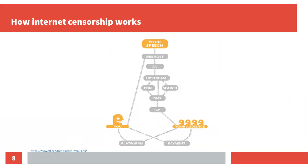That's enough about politics — let's get more technical. I took this picture from EFF. It shows you how internet censorship works. The idea is that you post your speech via a web host, and your audience has to pass all this chain to actually see your speech. At each part — ISP, DNS, CDN, and so on — it can break the chain. On the other hand, we have platforms like Twitter, Facebook, and payment systems, which can also be censored.